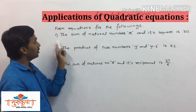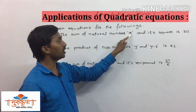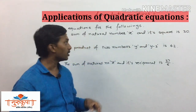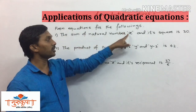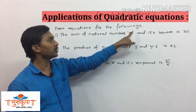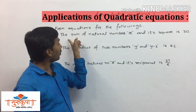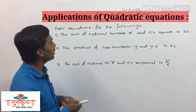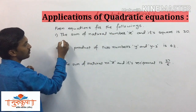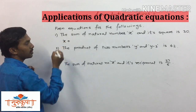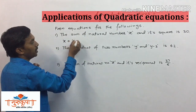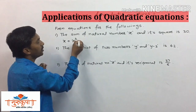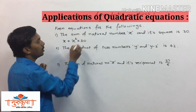First example: the sum of a natural number x and its square is 30. So we can simply write it as x plus x squared equals 30.